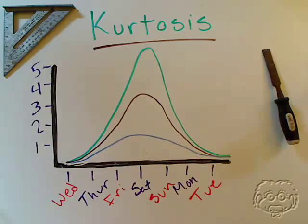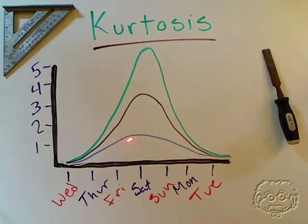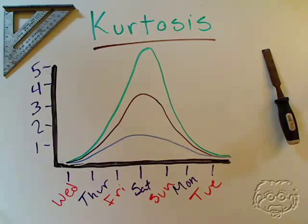Data sets with low kurtosis tend to have a flat top near the mean, rather than a sharp peak. See how we've got a flat top here? See how we have a sharp peak here? That's what we're talking about.